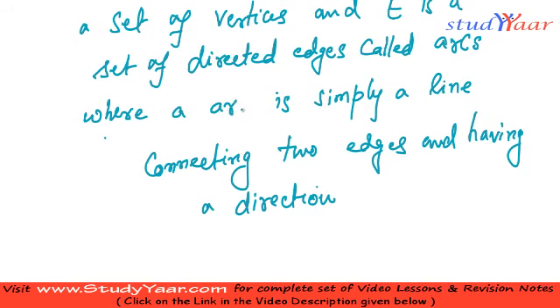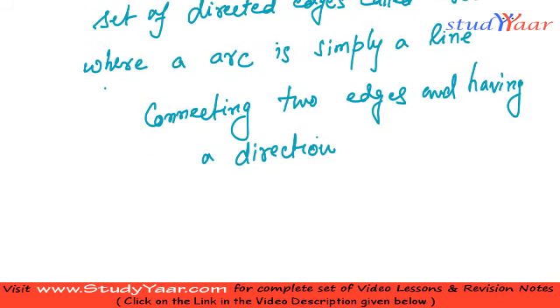An arc is simply a line connecting two edges and having a direction. So how do you define direction? Define direction with the help of an arrow head.